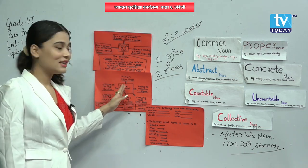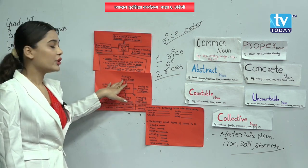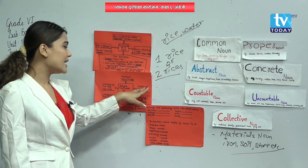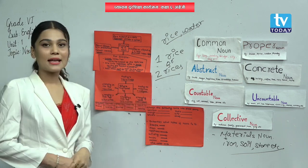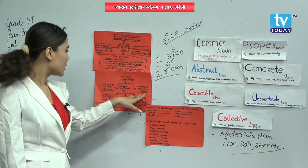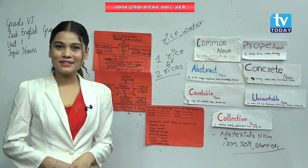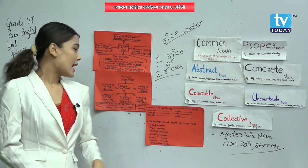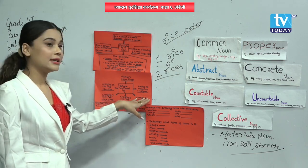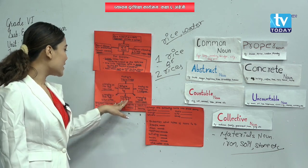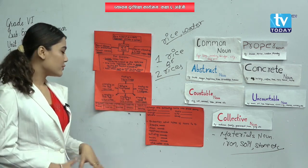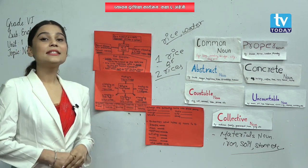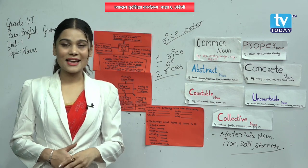Let me repeat. Adding 's': boy is singular, add 's,' it becomes boys — plural. Adding 'es': mango is singular, add 'es,' it becomes mangoes — plural. Changing the vowel: foot is singular, change the vowel, it becomes feet — plural. Changing 'f' into 'ves': calf is singular, add 'ves,' it becomes calves — plural.